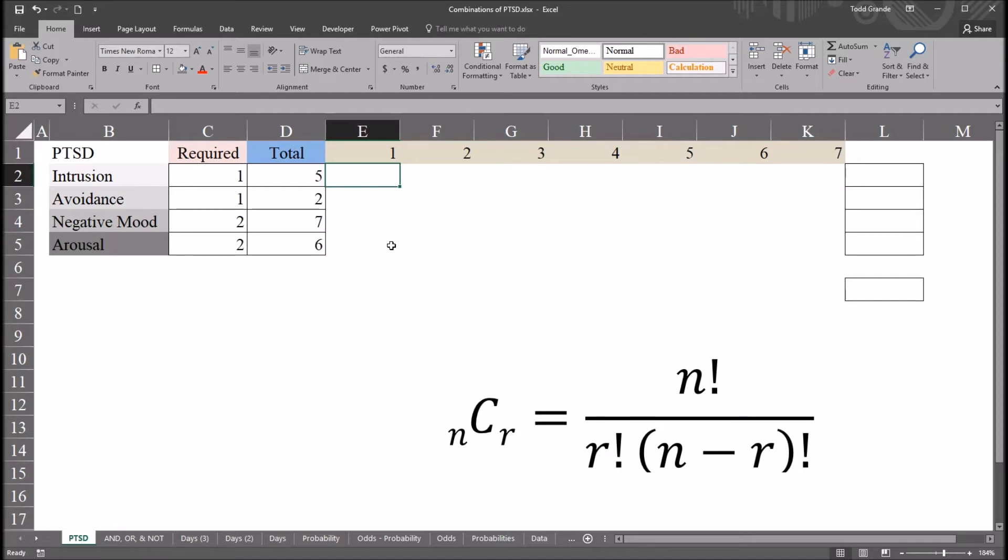Now, if it was two or more, you could also have, of course, A, B, and C. So there's actually four possible combinations there. So we would add the two combination calculations together. We would have the three plus the one.